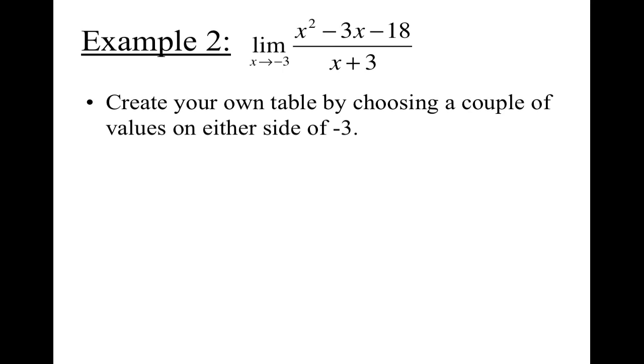So I want you to go ahead and create a table choosing a couple of values on either side of negative three. So since this is a limit as x approaches negative three, and it doesn't tell us specifically what side, we have to go from both. So go ahead, take a couple of minutes, press pause, and create a table of values.